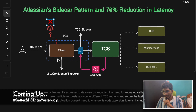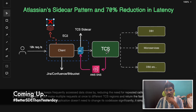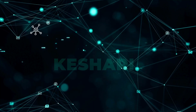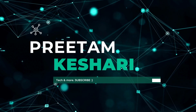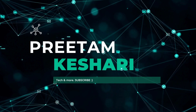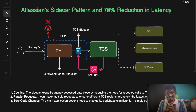With all this setup, a mammoth 70% reduction in latency and network calls was observed by Atlassian, and they achieved a P99 latency of around 0.7 milliseconds — it's mentioned in their article.